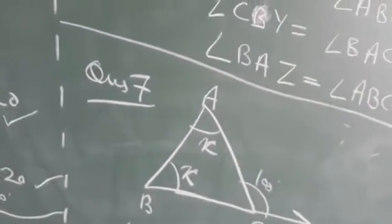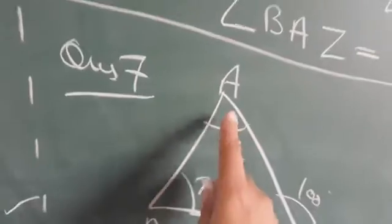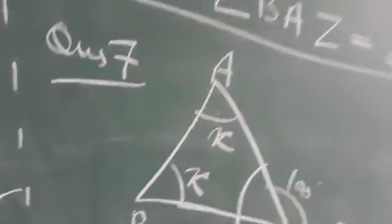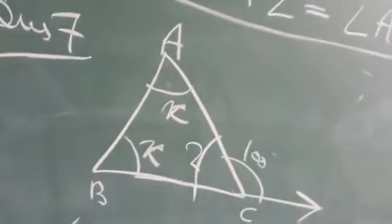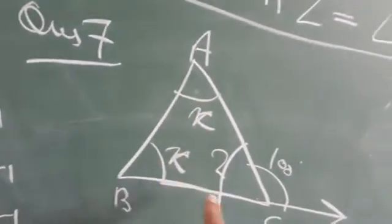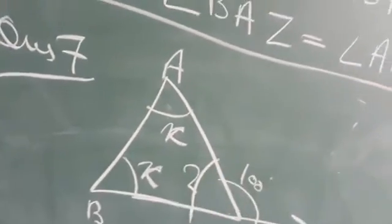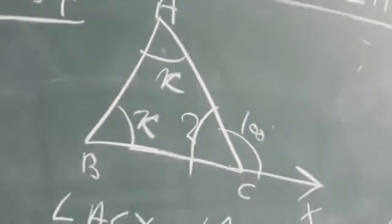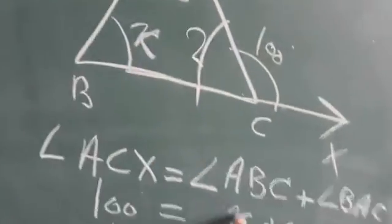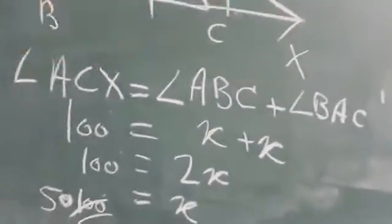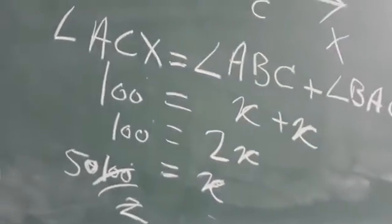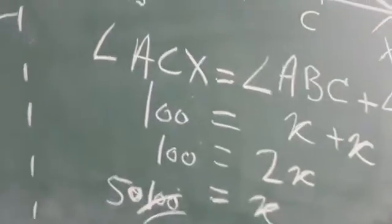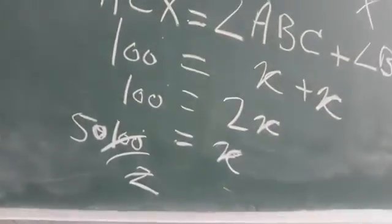Now 7th question। This is similar to question number 4 - the two angles are equal, both expressed as X. So: X + X = 100, which gives 2X = 100, divide by 2, X value = 50 degree।